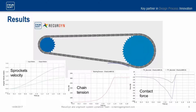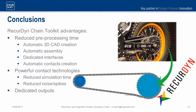In conclusion, the RecurDyne Chain Toolkit grants significant advantages to its users thanks to the automatic creation of the geometry, the automatic assembly of the chain, the automatic creation of all the contacts, and the dedicated interfaces. All these features significantly reduce the preprocessing time and allow the user to create an entire model with just a few steps. During the simulation, the proprietary contact technologies reduce the simulation time and the level of noise in the outputs. Lastly, the standard RecurDyne simulation outputs combined with the dedicated toolkit outputs allow the user to study and understand their mechanism in dynamic conditions.